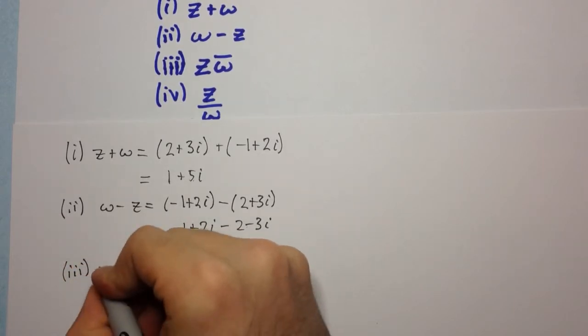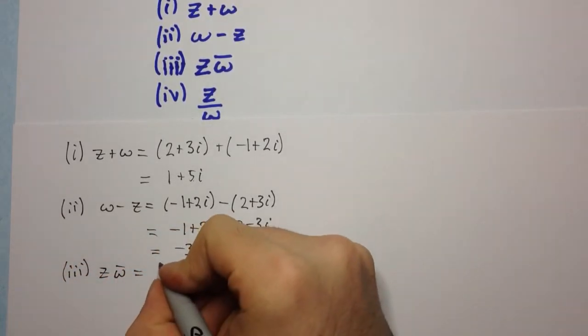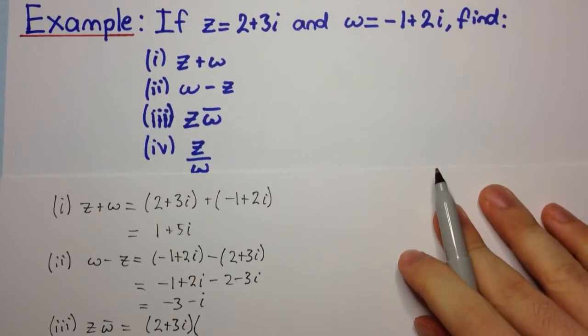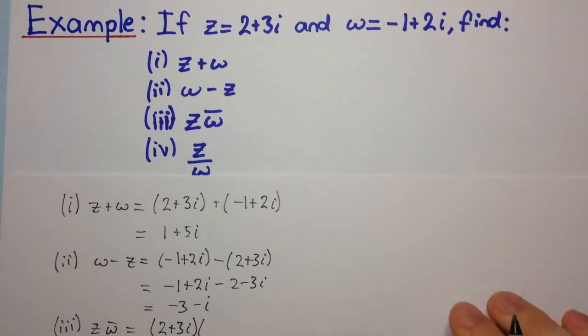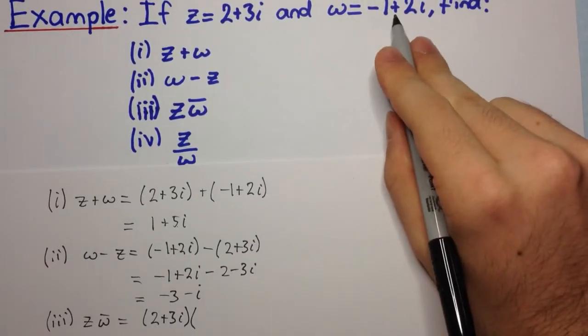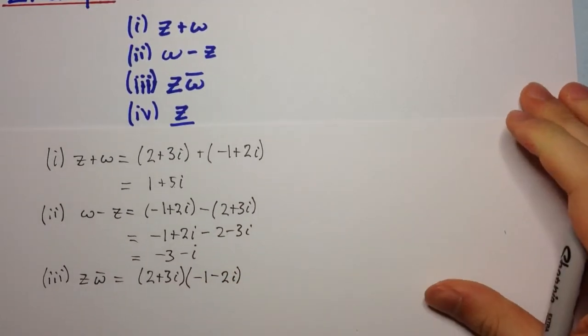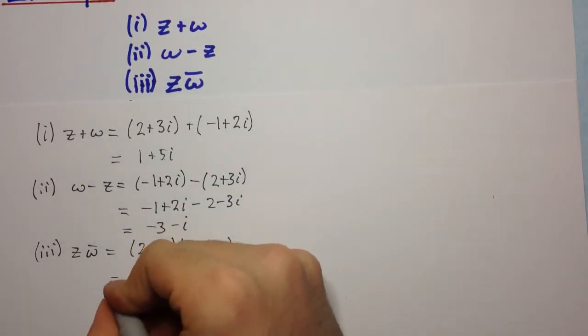Let's have a look at the next one: z times omega bar. Z is 2 plus 3i. Omega bar is the conjugate of omega. The conjugate of omega is just changing the sign, so since it's a plus, we change it to a minus. We have minus 1 minus 2i. Now we can expand this as if it was a normal algebraic expression.